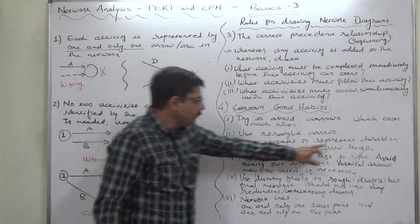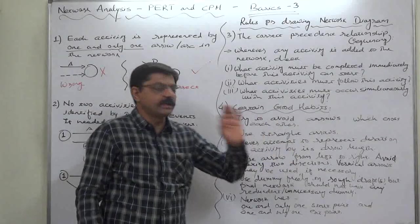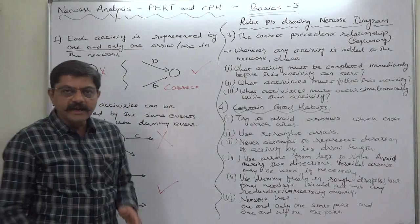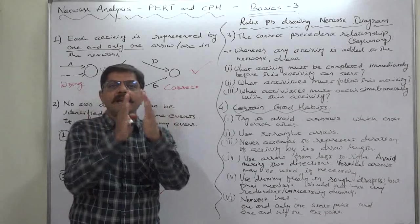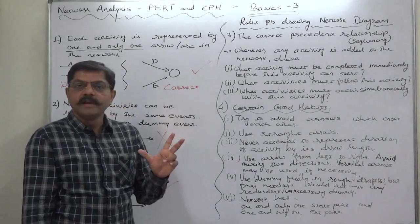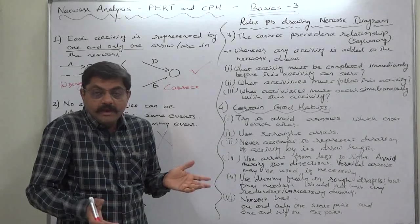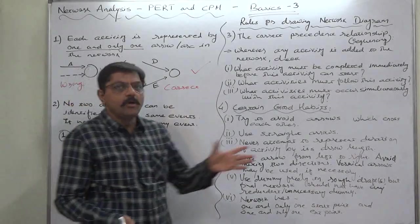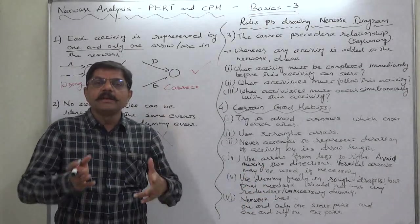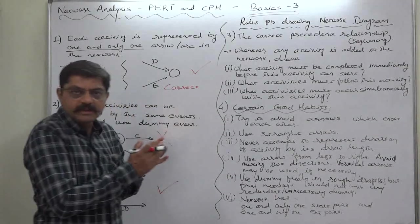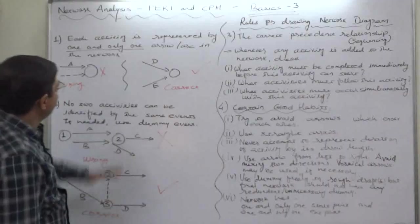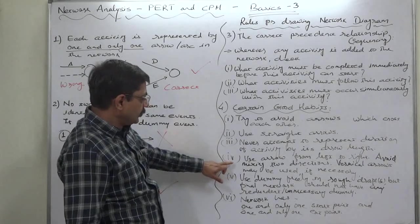Number three, never attempt to represent duration of activity by its arrow length. This is very important point. Many times, the novice students try to represent the duration of the activity by the length of the arrows. No, never do it. An activity having lesser time can be or we have to represent by a longer arrow. And, maybe, an activity having too much long time, we have to adjust it with a very short arrow. Whenever we draw the PERT chart, whenever we prepare a network diagram.